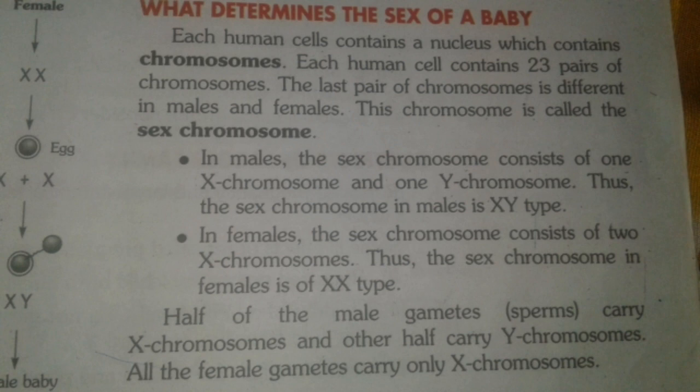The X chromosome and Y chromosome are responsible for giving birth to a male or female child. Each human cell contains a nucleus which contains chromosomes, and chromosomes contain genes. Each human cell contains 23 pairs of chromosomes. The last pair of chromosomes is defined as the sex chromosome.